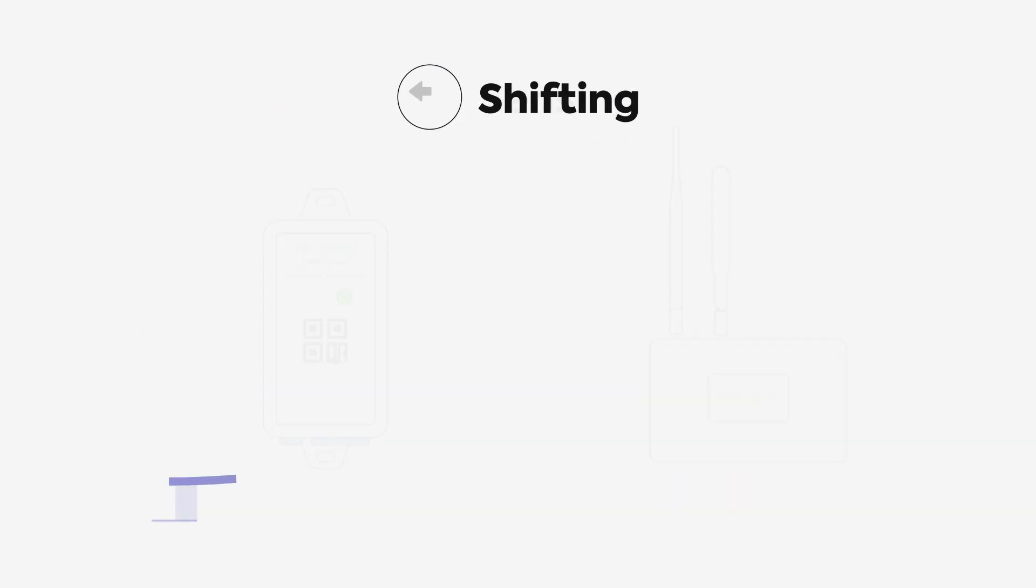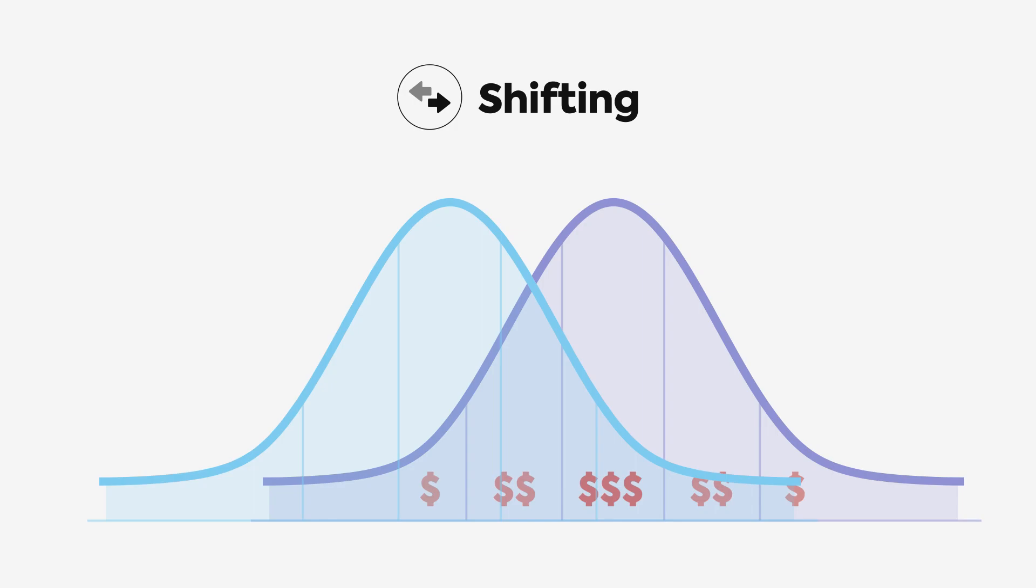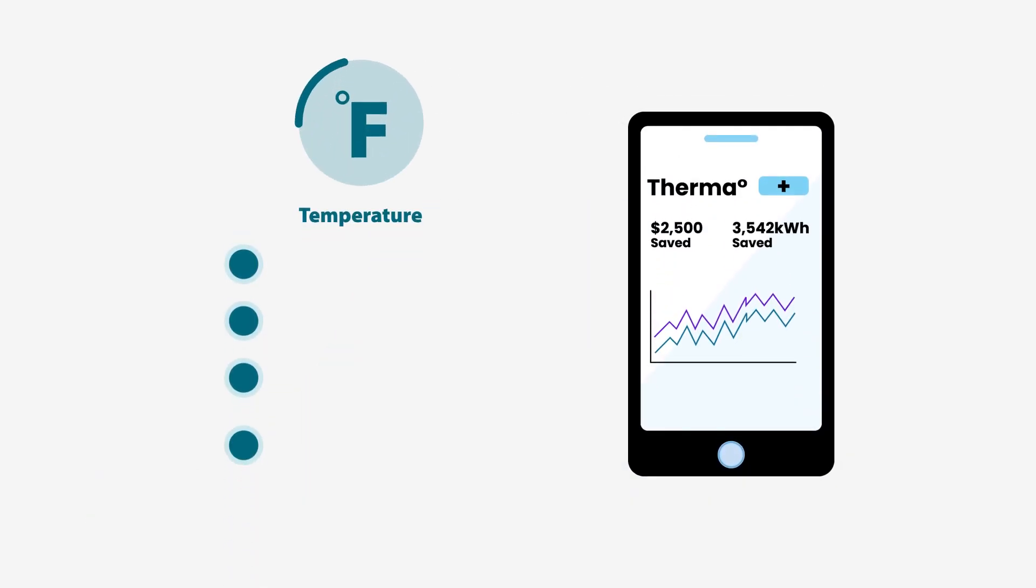Therma then optimizes your energy consumption by shifting your usage from peak to non-peak hours when rates are lower. You'll be able to set custom thresholds to ensure your assets' temperatures stay within your desired range at all times.